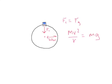Notice here we can cancel out the mass, and that tells us that the mass of the object undergoing vertical circular motion is irrelevant to the velocity required.